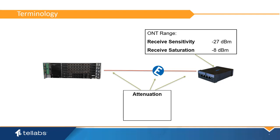Attenuation is the decrease of signal strength during data transmission, measured in decibels or dB. Expected elements that create attenuation on the fiber span are the splitter, the connection points, and the total fiber distance.